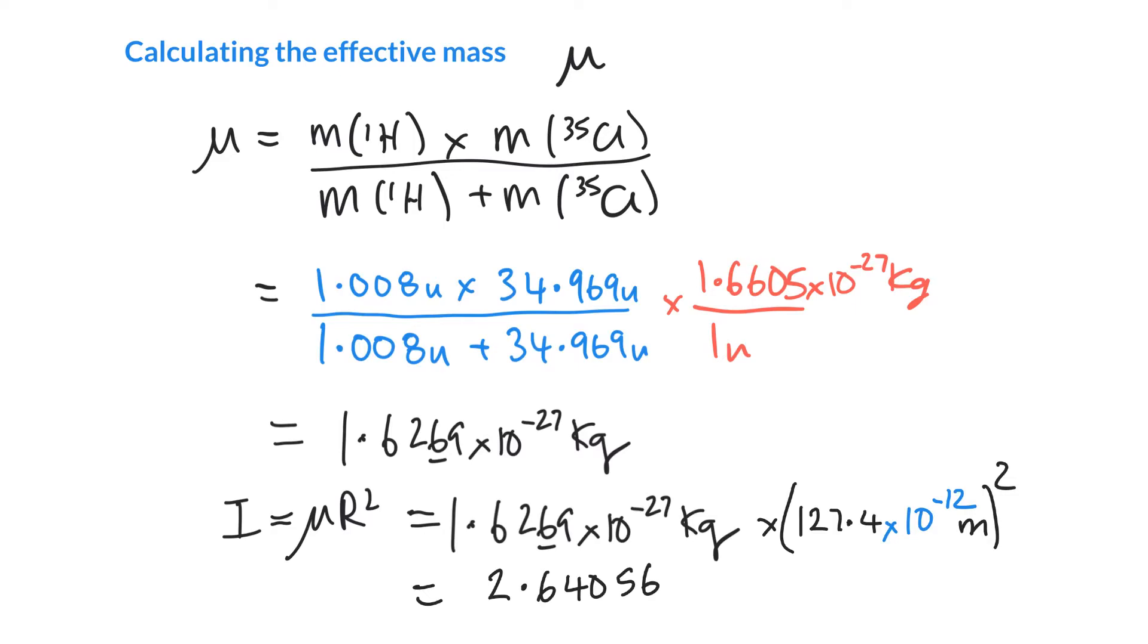If we run that on our calculator, we get 2.64056 times 10^-47. That's probably too many significant figures. The units are kilograms meter squared.